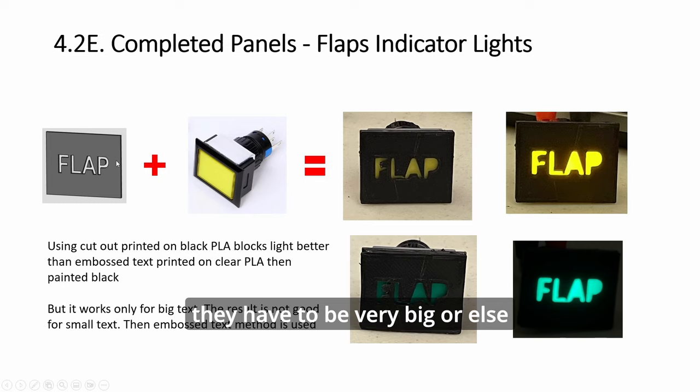When you print out it will be just like this. I know it doesn't look very clean. The problem with cut-out text is that it has to be very big or else it will not be good and you might have to use a cutter to trim it. But it covers the light very well - there's no light bleed compared to the other method where you emboss the text, spray everything black, then file away the embossed text at the top. That one you can accept smaller font size but there's a lot of bleeding. This blocks light very well.